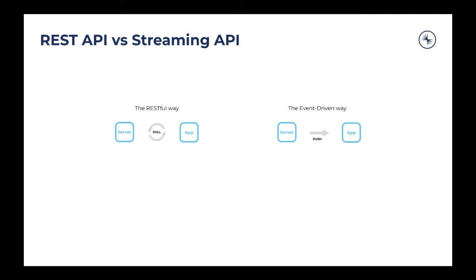You can think of the RESTful approach as going back and forth to the server to get what you desire — typically data points which the application needs. In the event-driven way, think of it as continuous delivery of data to the application from the server. Another way to compare the two is through the communication mechanism: REST APIs use a pull-based approach where you send a request and get a response back. Event-driven APIs use a push-based approach where the server pushes data points to the application.